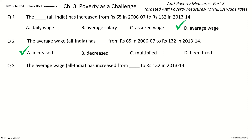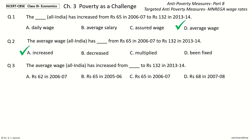Question 3: The Average Wage All India has increased from Dash to Rs. 132 in 2013-2014. The options are: Rs. 62 in 2006-2007, Rs. 65 in 2005-2006, Rs. 65 in 2006-2007, Rs. 68 in 2007-2008. The answer is Rs. 65 in 2006-2007.